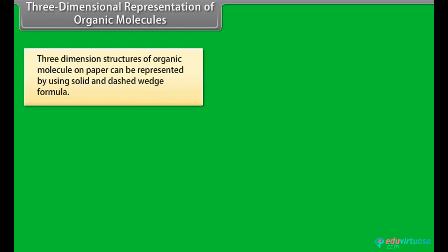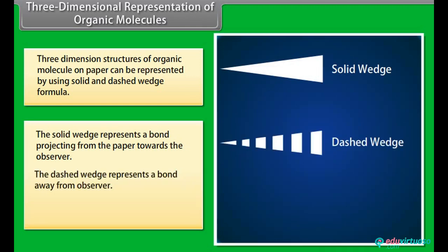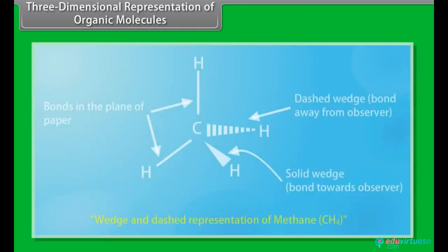Three-dimensional representation of organic molecules: 3D structures of organic molecules on paper can be represented using solid and dashed wedge formulas. The solid wedge represents a bond projecting from the paper towards the observer. The dashed wedge represents a bond going away from the observer. A simple line represents a bond that lies in the plane of the paper. For example, methane.